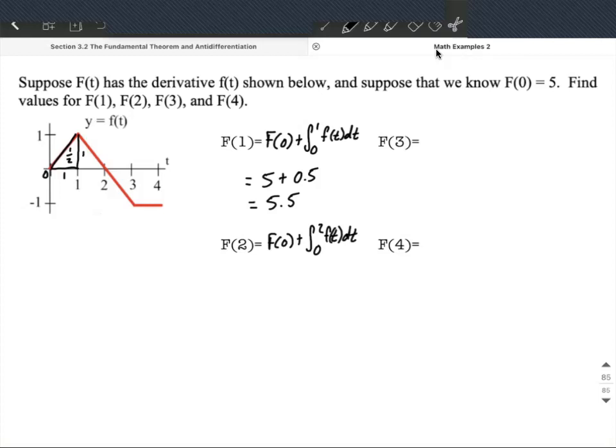This is all the area between 0 and 2—both triangles. The next triangle has base 1 and height 1, so 1/2 base times height gives another 1/2.